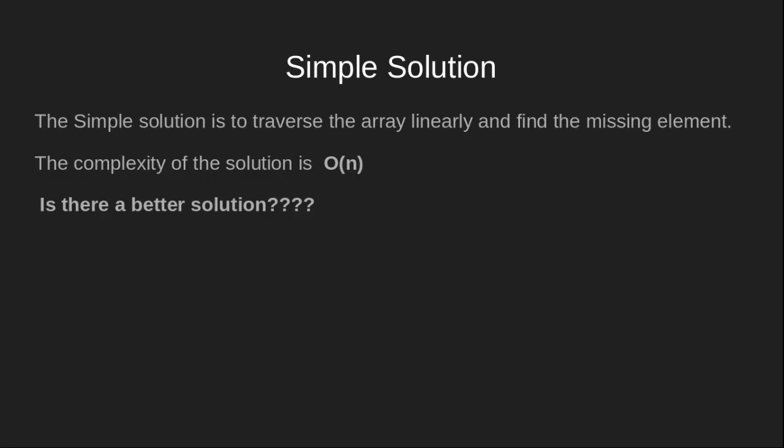The basic approach is to traverse the array linearly and find the missing element. This solution is fine for smaller arrays of size 10, 12, 40, or 100, but for arrays with greater size like thousands, our solution will take a very long time to compute. For example, if we have an array of 1000 elements and the missing element is near the end, we will traverse the whole array and perform unnecessary computations. Is there a better solution? The answer is yes.